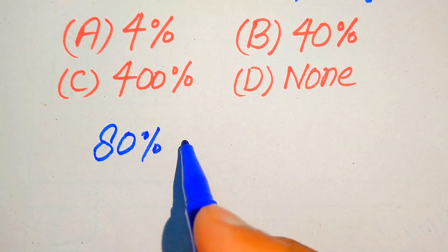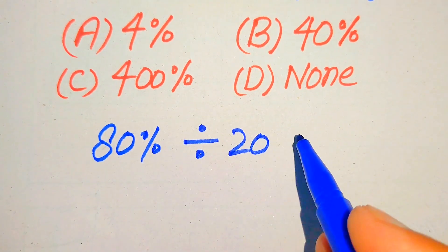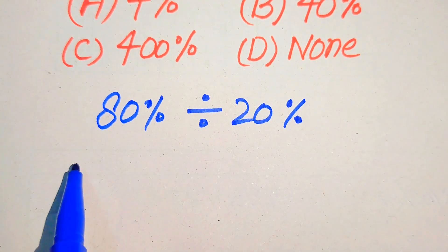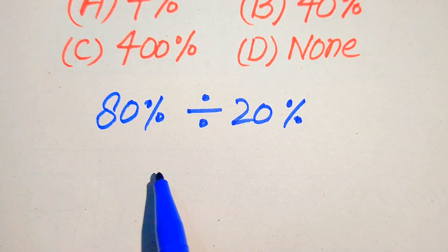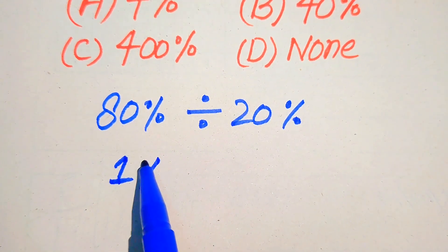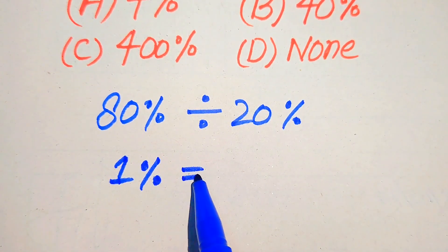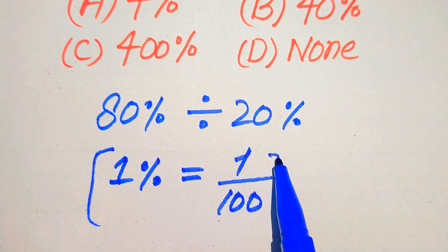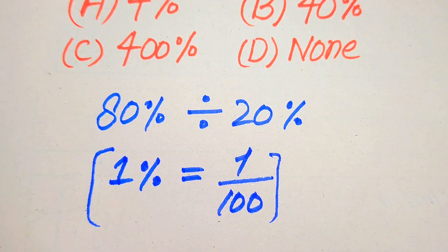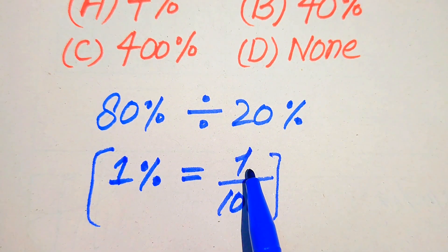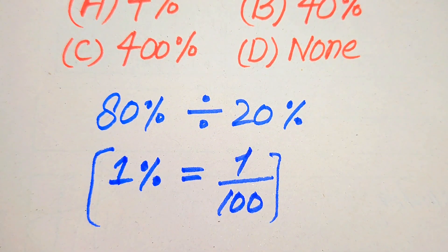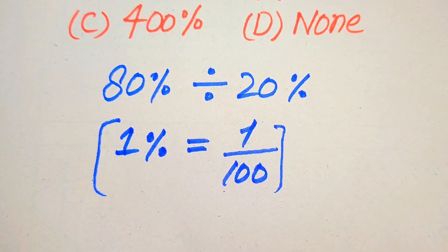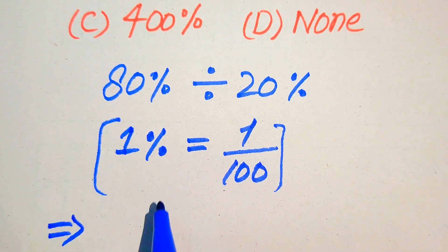Here it is: 80 percent divided by 20 percent. We'll find and simplify this expression. You know that we have the formula 1 percent equals 1 divided by 100. This means when you remove the percentage sign from any digit, you just multiply it by 1 over 100, or divide it by 100. Our first target is to remove both of these percentage signs.